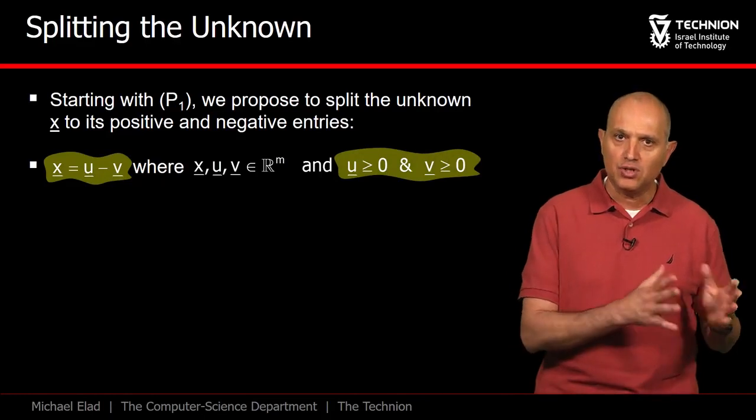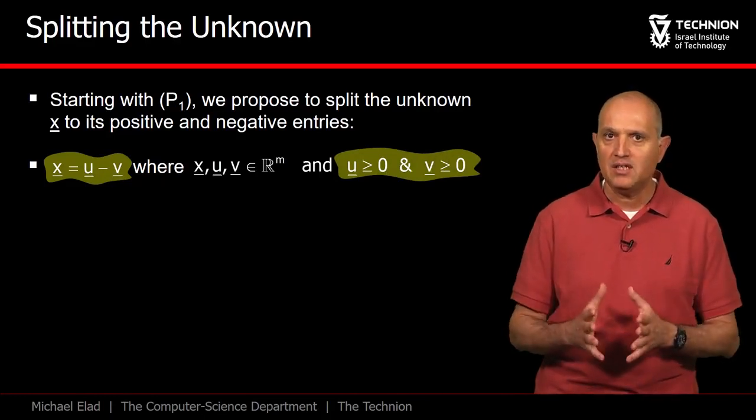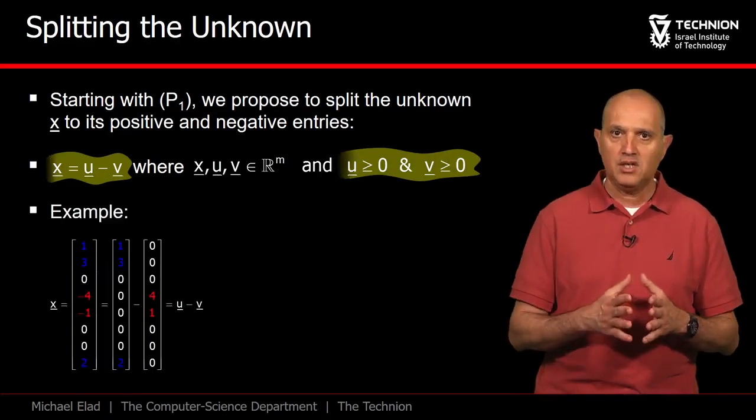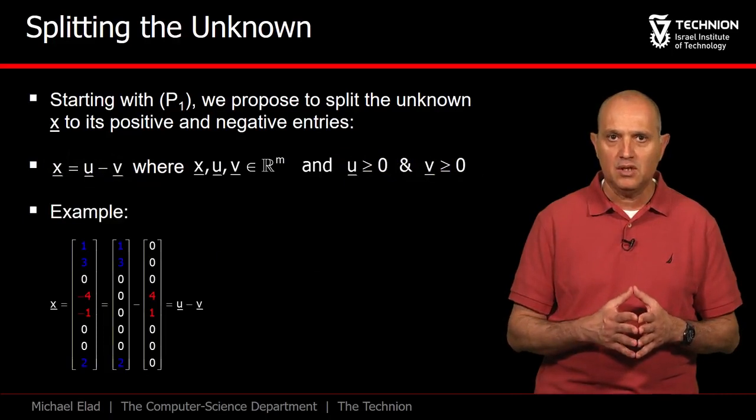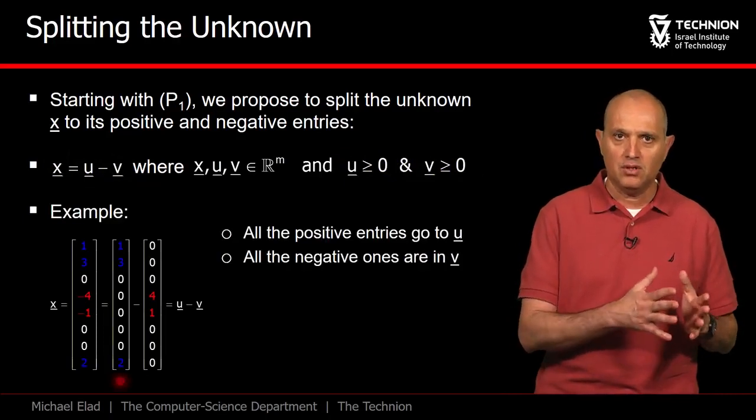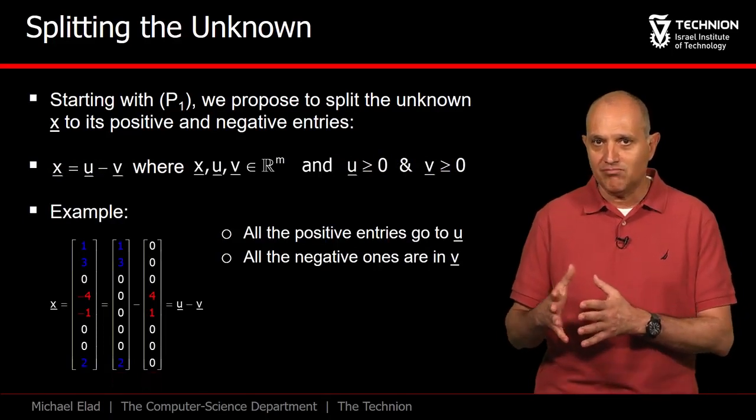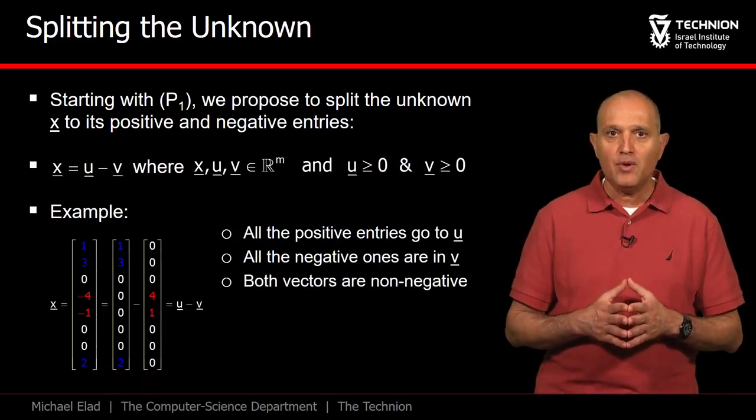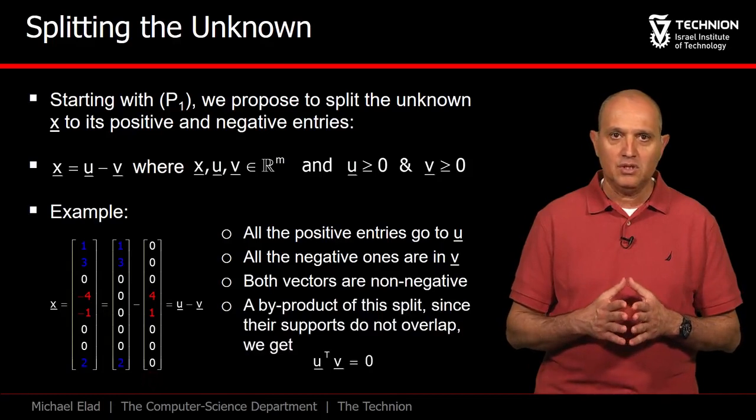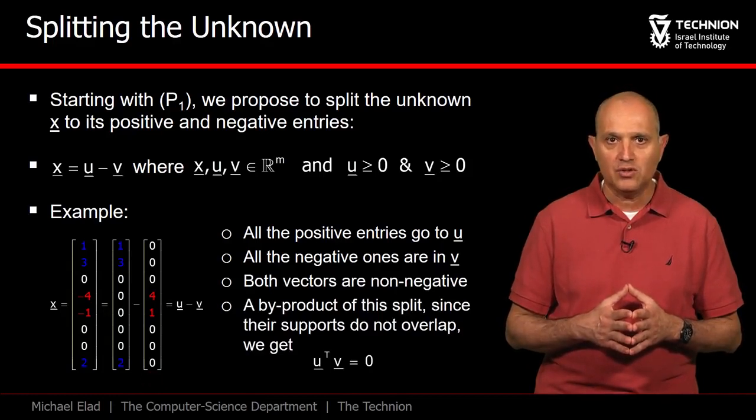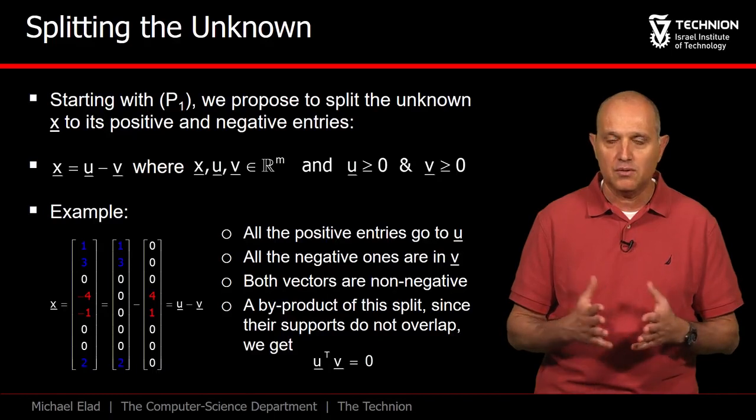u takes all the positive entries from x, and v takes the negative ones. Here is an example to illustrate this split. Notice how u took the positive blue entries, v took the negative ones in red, and both u and v are non-negative. Notice that the supports of these two vectors do not overlap, causing their inner product to be zero.